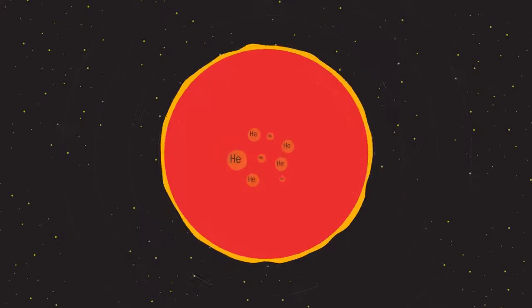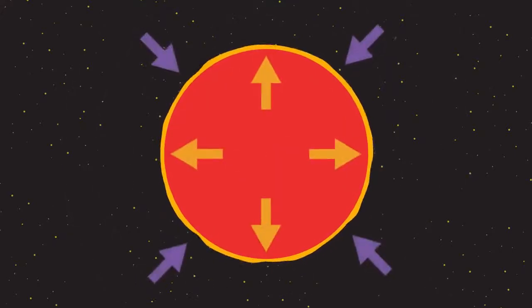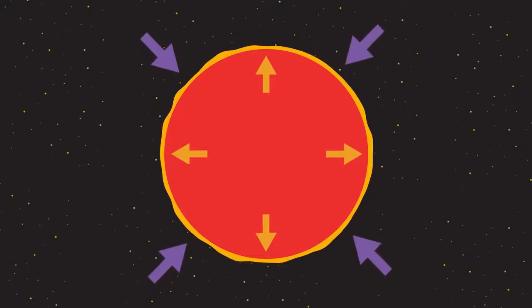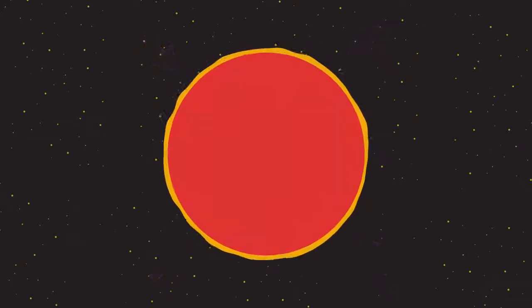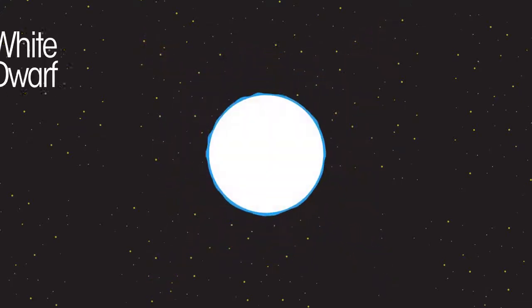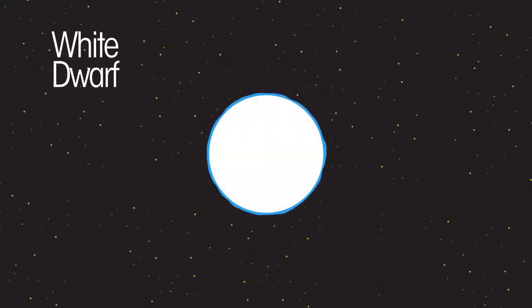Next, fusion of helium in the red giant will eventually stop. Suddenly, the force of gravity is greater than the outward pressure of fusion, causing the star to collapse forming a white dwarf. No more fusion is occurring inside the star and so the white dwarf cools down.